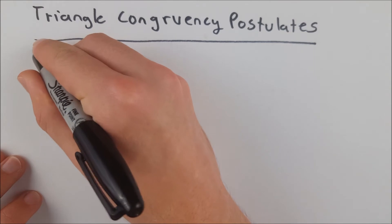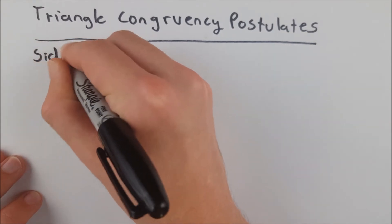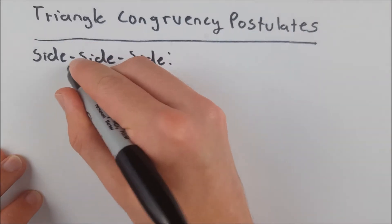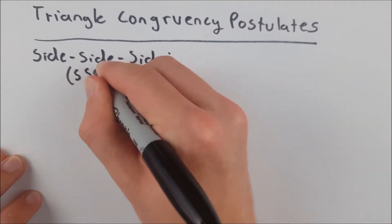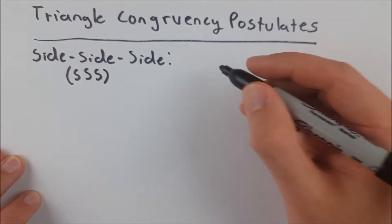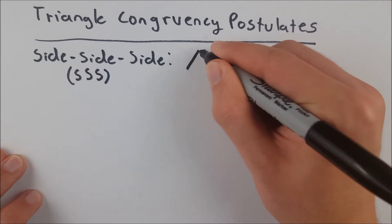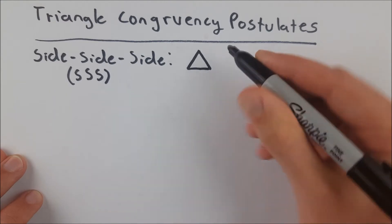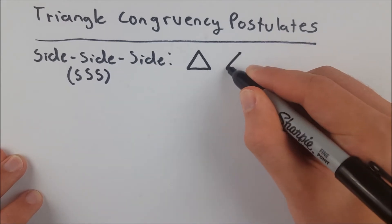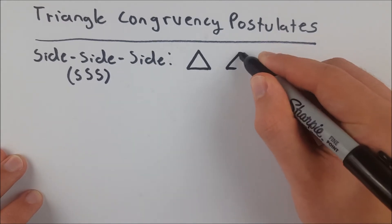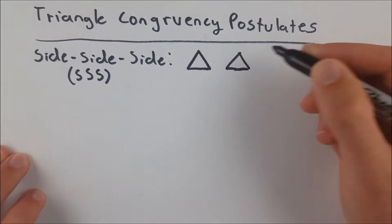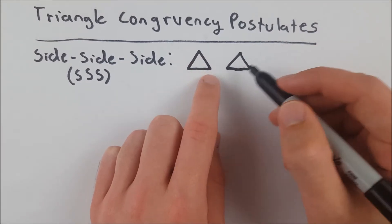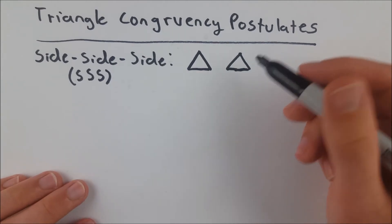So let's start off with the most basic one, which is side-side-side. The side-side-side congruency postulate, which we can also write as SSS, simply states that if two triangles have three congruent sides, then they are congruent. So by that, I mean if two triangles have three sides that are congruent to each other, that means the triangles are congruent.